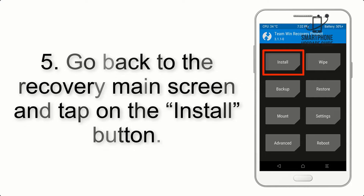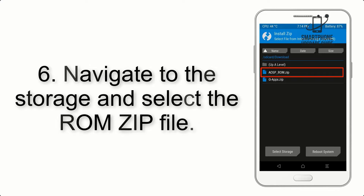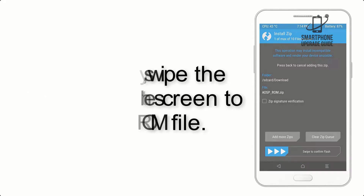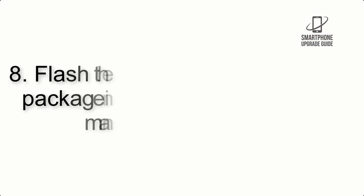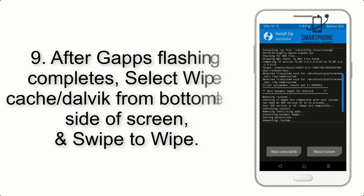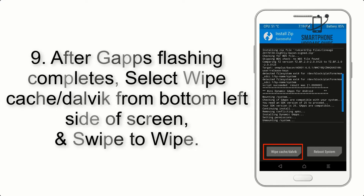Step 4: Swipe the button to wipe the device. Step 5: Go back to the recovery main screen and tap on the Install button. Step 6: Navigate to the storage and select the ROM zip file. Step 7: Swipe the button on the screen to install the ROM file. Step 8: Flash the GApps zip package in the same manner.